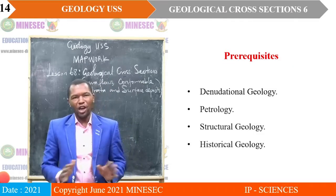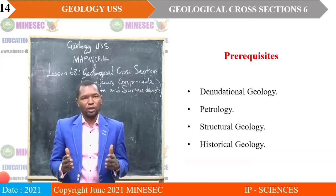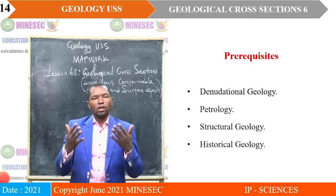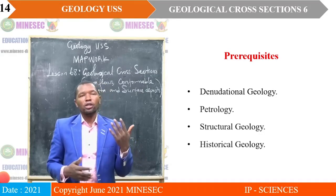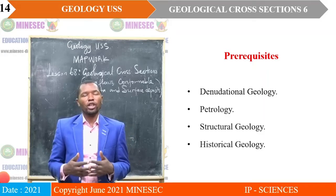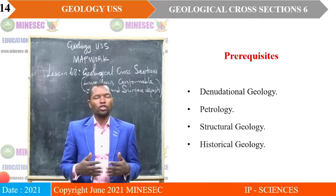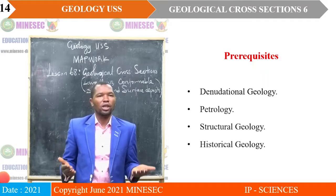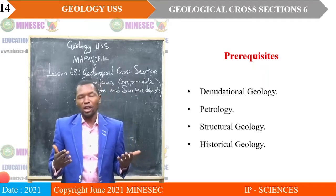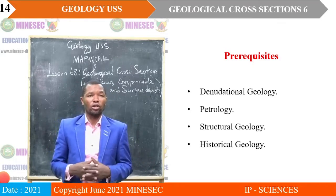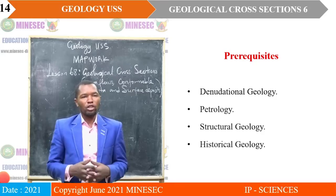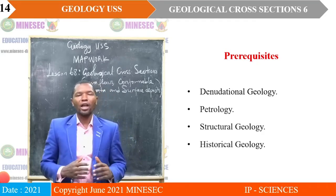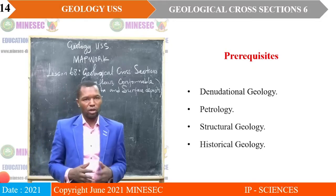Information that is vital in order for us to understand the criteria for drawing geological cross-sections of lava flows, conformable strata, and surface deposits includes the need for effective knowledge on denudational geology, on petrology, on structural geology, and on historical geology.